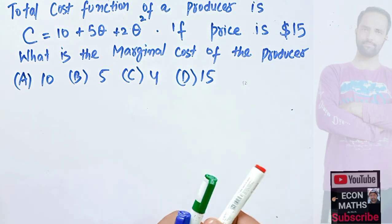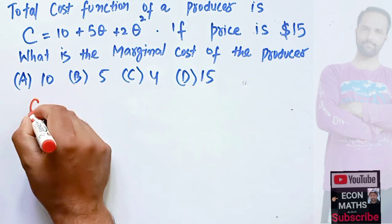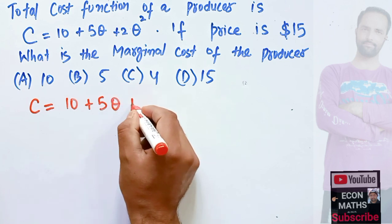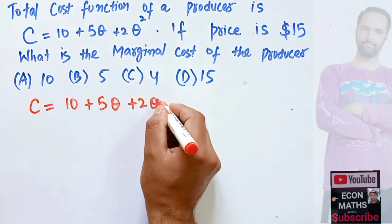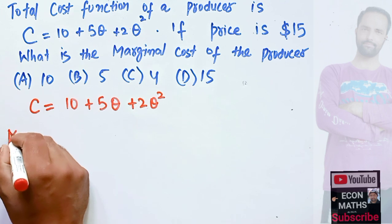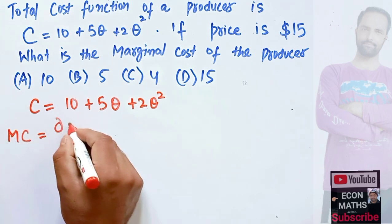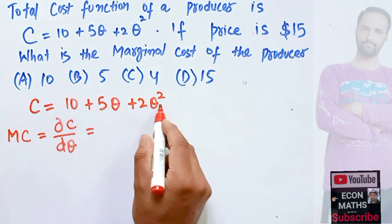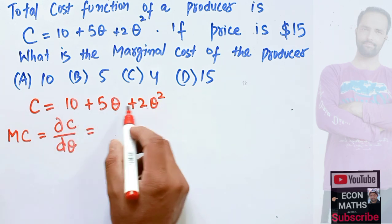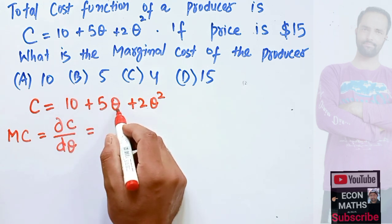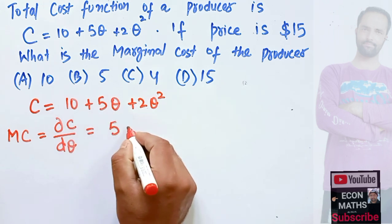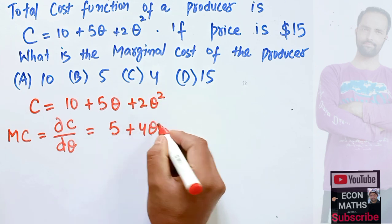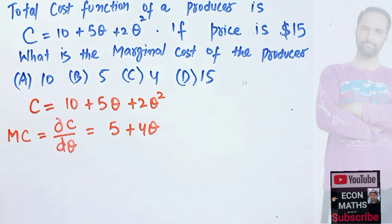We are given that total cost is 10 + 5Q + 2Q². Marginal cost is simply the derivative of the total cost function with respect to output Q. Taking the derivative: the derivative of the constant 10 is 0, the derivative of 5Q is 5, and the derivative of 2Q² is 4Q. So our marginal cost function is 5 + 4Q.